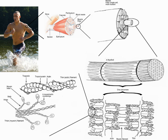In skeletal muscles, muscle spindles convey information about the degree of muscle length and stretch to the central nervous system to assist in maintaining posture and joint position. The sense of where our bodies are in space is called proprioception, the perception of body awareness, the unconscious awareness of where the various regions of the body are located at any one time. Several areas in the brain coordinate movement and position with the feedback information gained from proprioception. The cerebellum and red nucleus in particular continuously sample position against movement and make minor corrections to assure smooth motion.